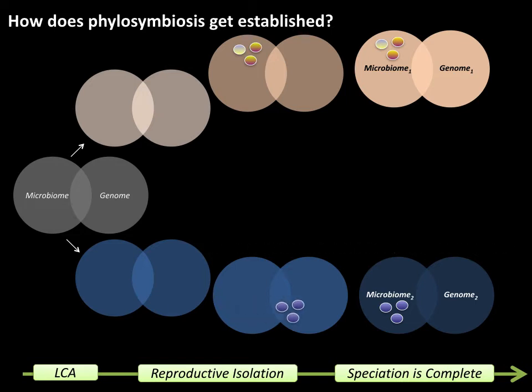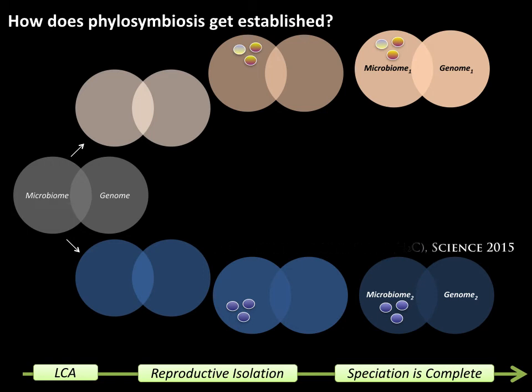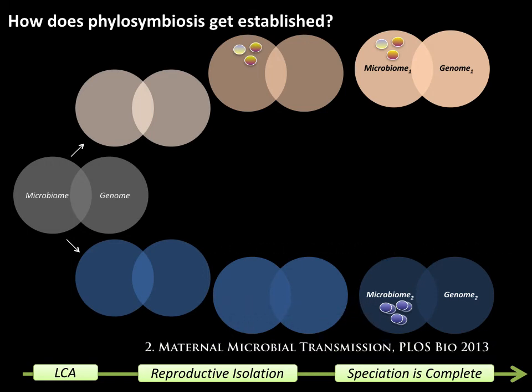Another way to think about this is vertical transmission. We do not know the relative extent of horizontal transmission that sets up phylosymbiosis versus vertical transmission. We have published some work on thinking about how maternal transmission might occur more widely in the animal world, but I'm not going to get into that right now.